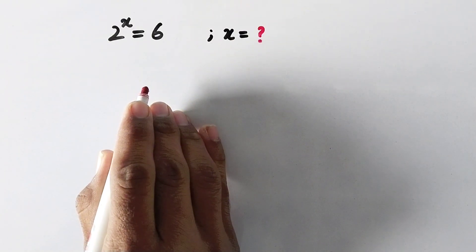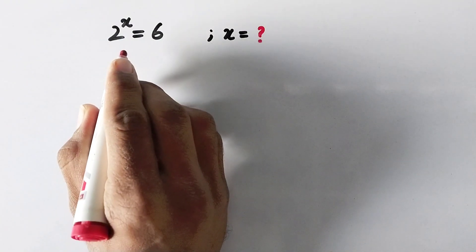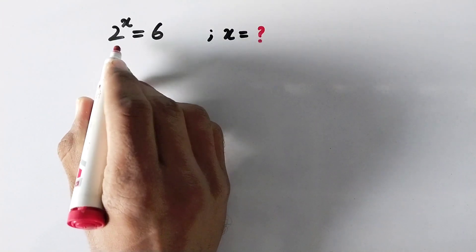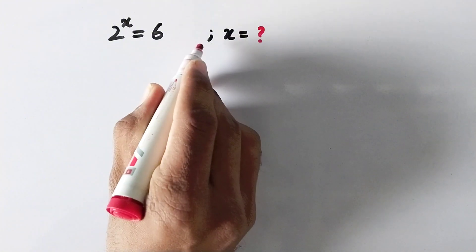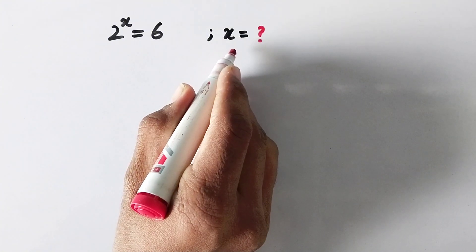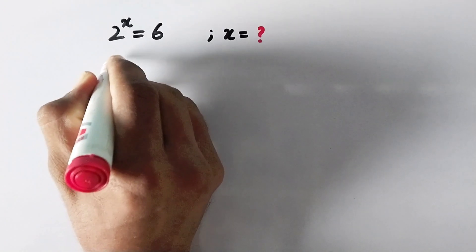Hello everyone and welcome to Explode Maths. Today we have to solve the problem: 2 raised to power x is equal to 6, and we have to find the value of x. So let us see the solution.